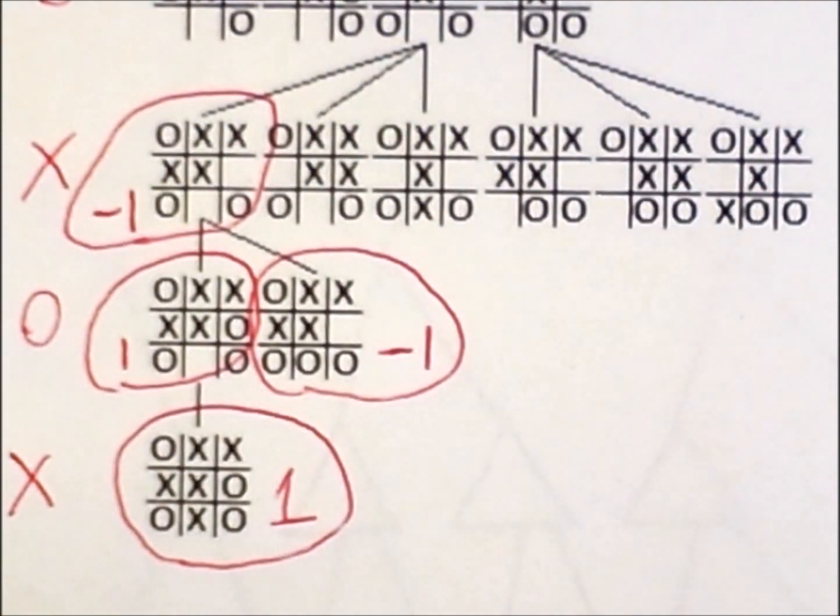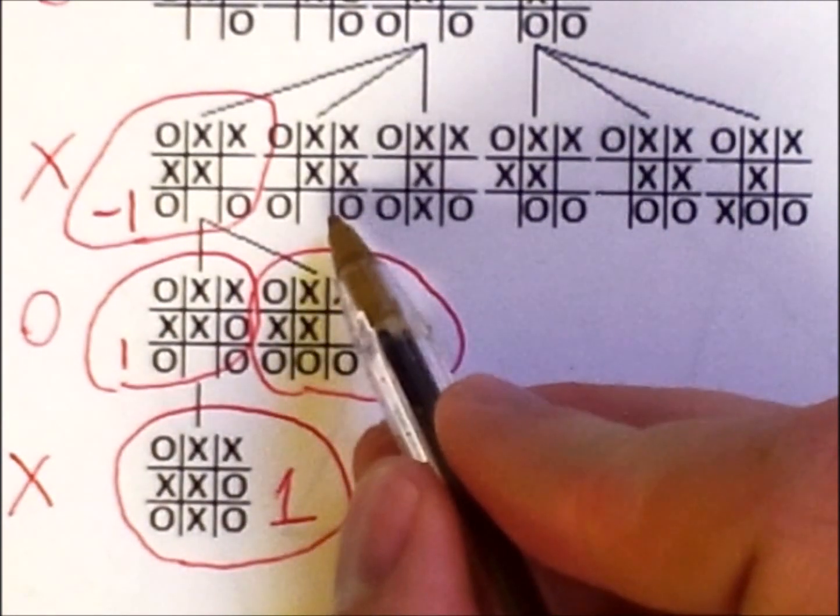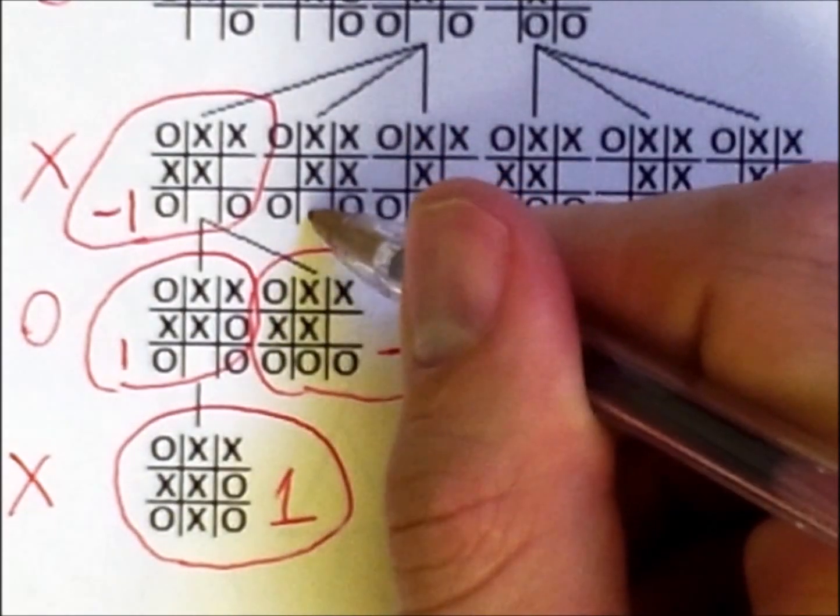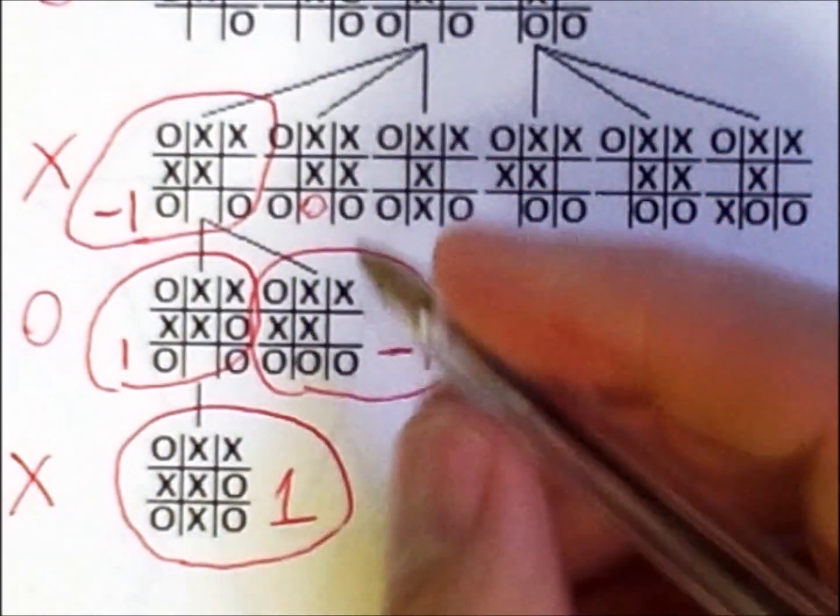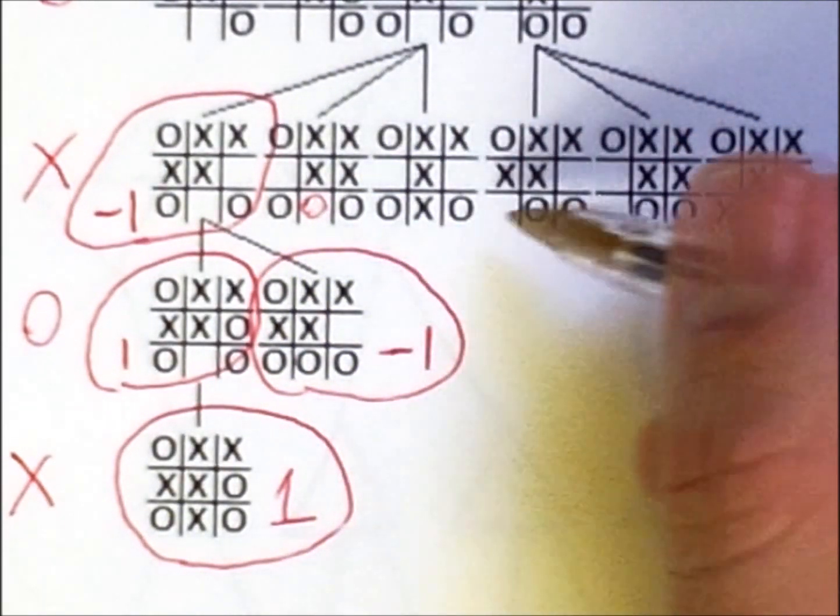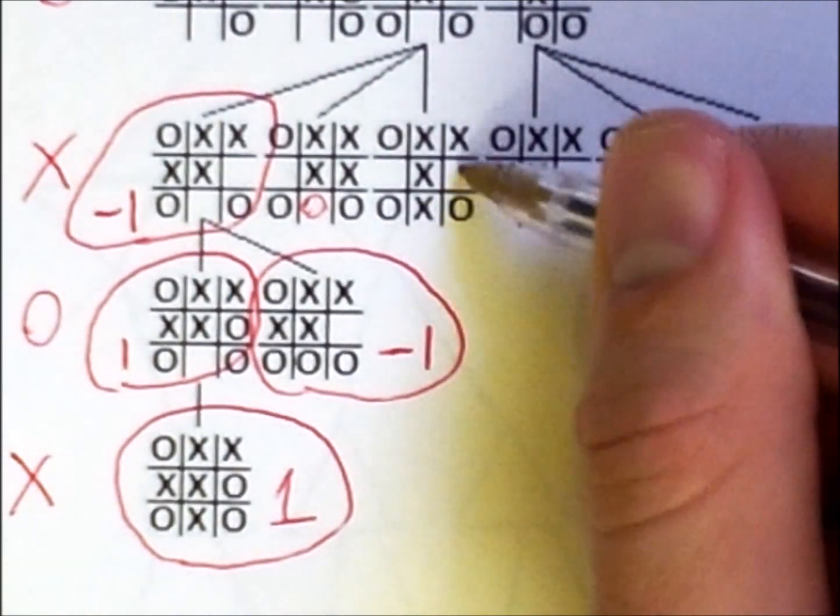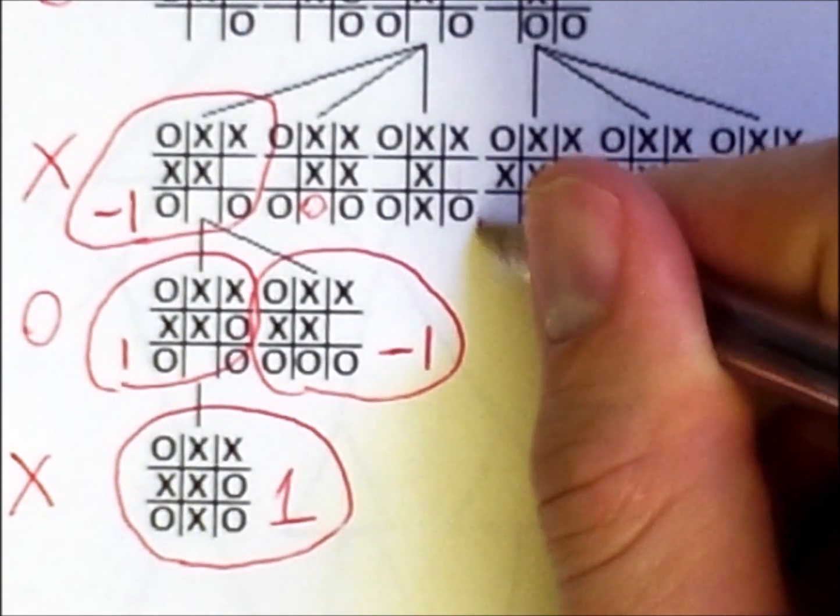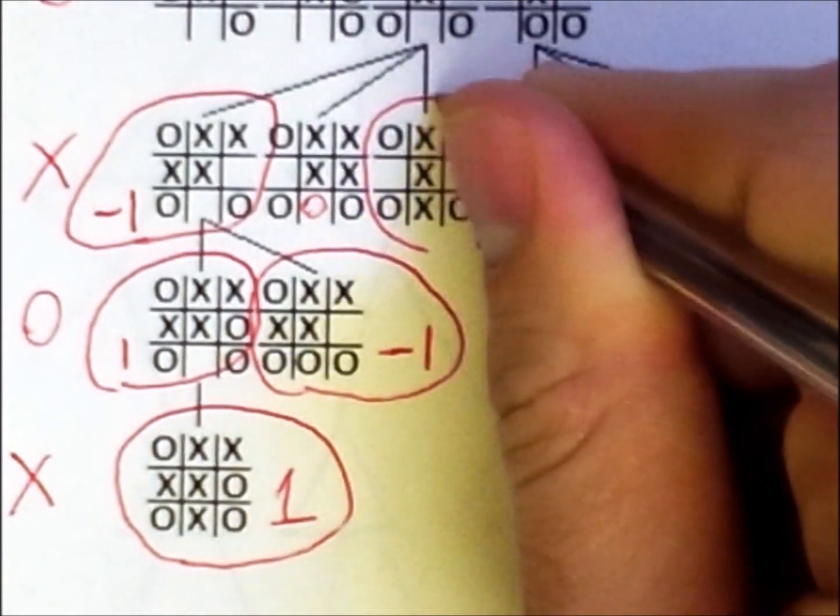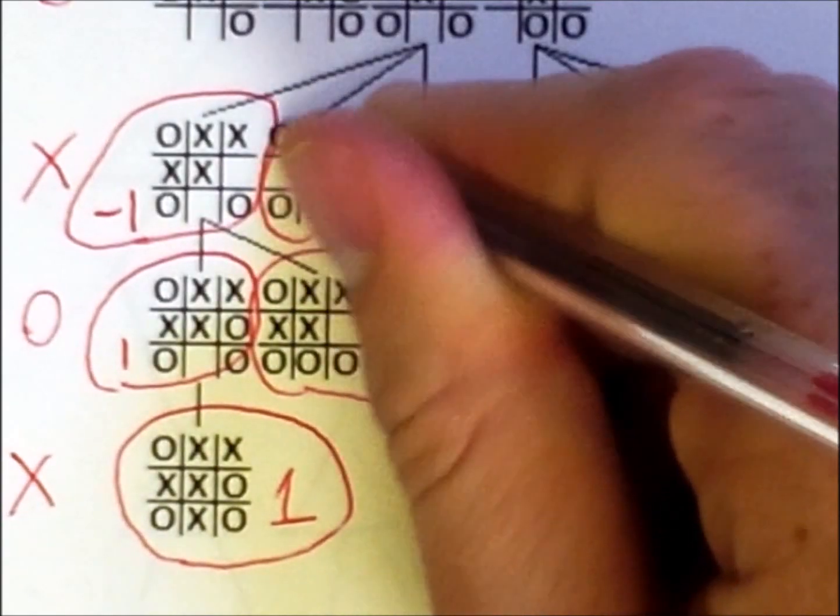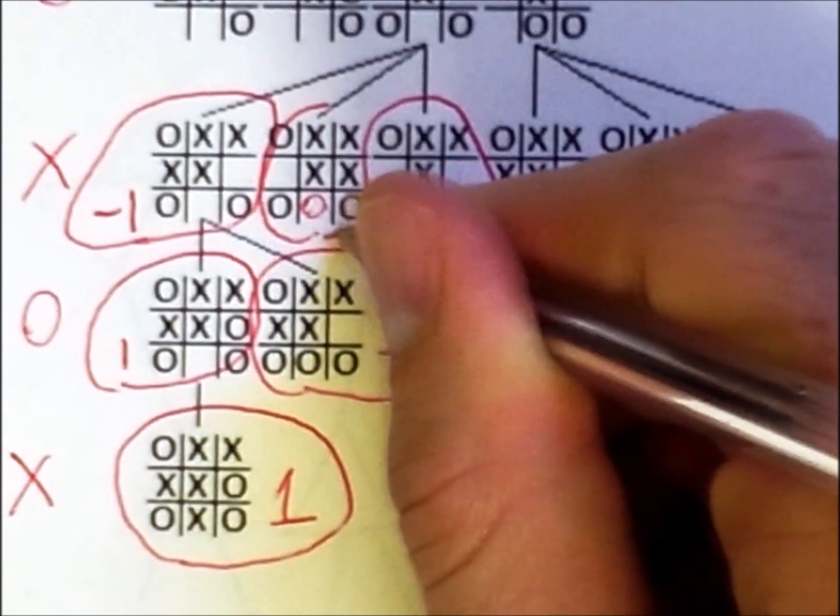Now we know from the previous video, and from looking at these states, that if o makes the next move, then o can easily win here. And we also can see that x is actually 1 here. So this state has a value of 1, whereas this state would get a value of negative 1.